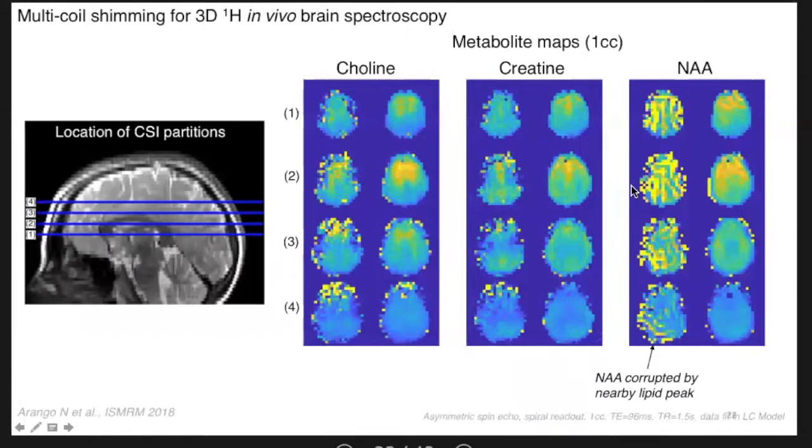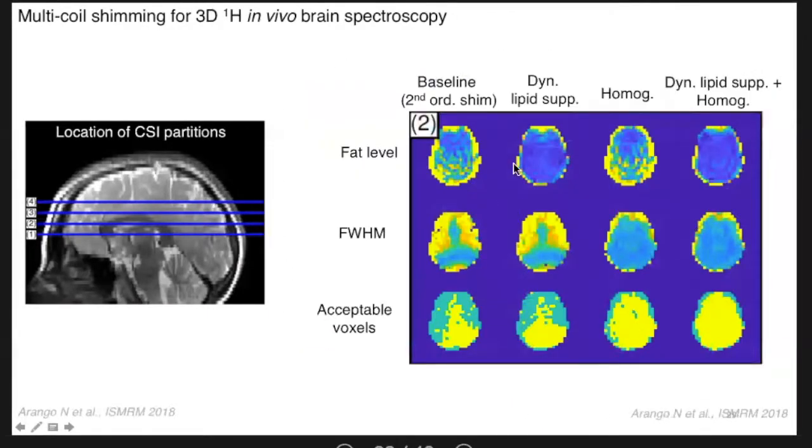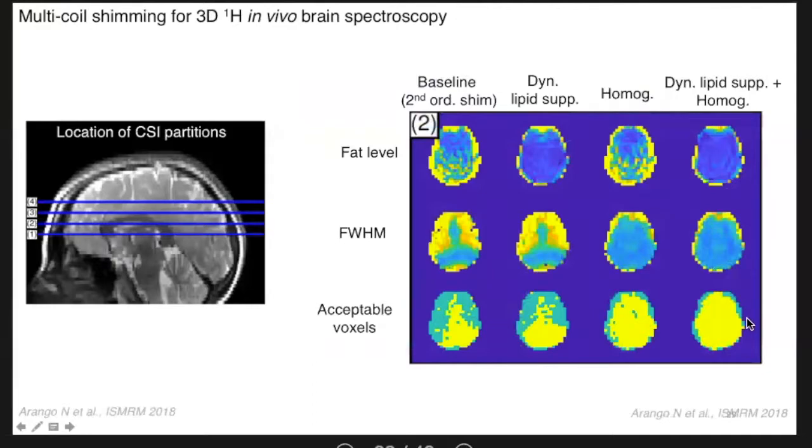And actually, when you look at the metabolite maps for choline, creatine, and NAA, we're seeing pretty nice improvements over the baseline case where you still had residual lipids that were contaminating your spectra and making it hard to quantify the metabolites, especially the NAA that's spectrally close to the lipids. And this just shows that the fat level in each voxel is going down, especially away from the skull. Also, the homogeneity shimming helps a little bit with the full width half max. It gives you cleaner spectra. So overall, if you quantify this as how many acceptable voxels are there in the volume, we're able to recover not every voxel, but we're able to recover a lot of these bad voxels that are in teal in this plot. So this was cool.